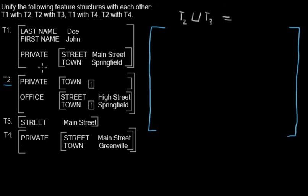So I will just start writing down all properties from T2. We have private with town where the value is replaced by a pointer.